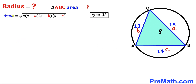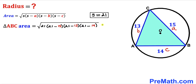Now we calculate the area of triangle ABC. Our s value is 21, so I'll replace all the s values with 21, and substitute a = 15, b = 13, and c = 14. We can see that 21 − 15 = 6, 21 − 13 = 8, and 21 − 14 = 7.